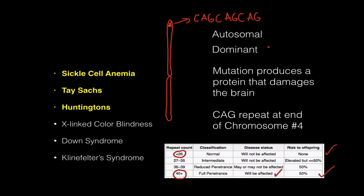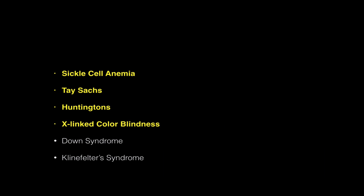Because it's autosomal dominant, a genotype of big H, little h, for example, is going to have the disease, and has a 50% chance of passing the big H — which is the problem — on to their offspring. One of the more interesting ones.